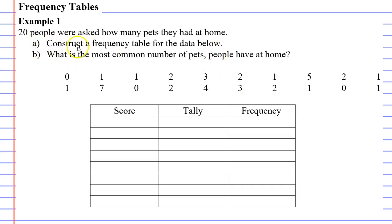Question A says construct a frequency table for the data below. A frequency table is basically what's below. We're just going to fill it in and we start with our score section.